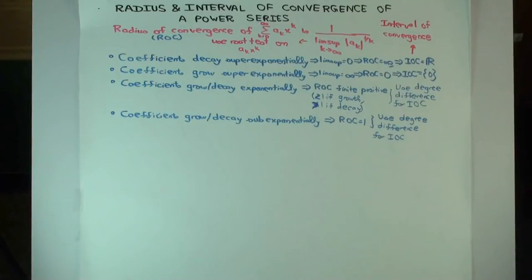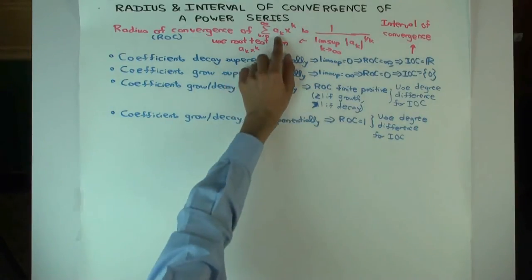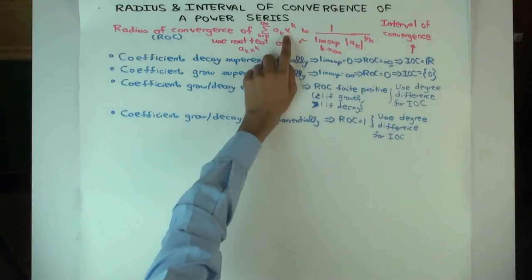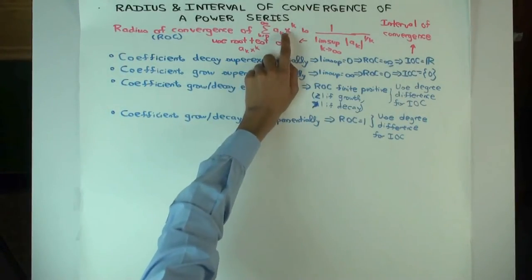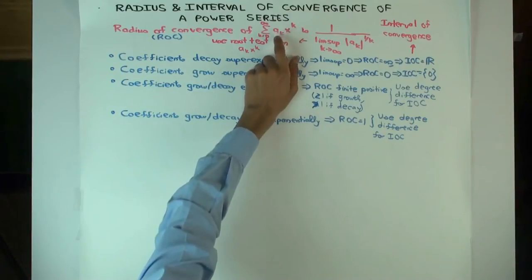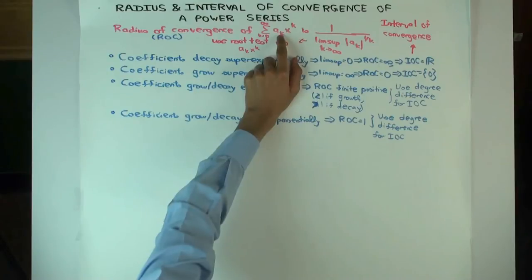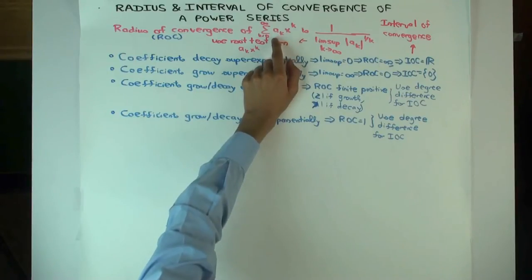In this talk we are going to consider the process of determining the radius of convergence and the interval of convergence of a power series. Our power series is summation ak x to the k — a power series with variable x. The coefficient of x to the k is ak, and ak will be some function of k. We have to figure out the radius of convergence. This is a power series centered at 0.